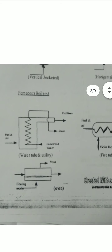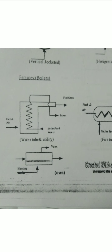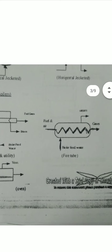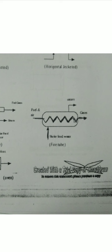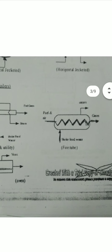Then furnaces and boilers. The boiler symbol shows: fuel and air passes through it, boiler feed water enters from one side, and steam and fuel gases come out. The fire tube boiler symbol shows fuel and air passing through a coil under water. Steam comes out and gases come out from another side.